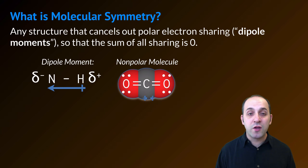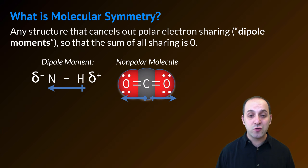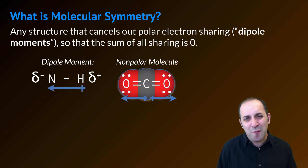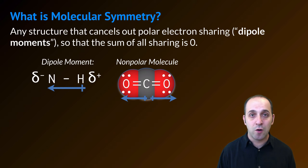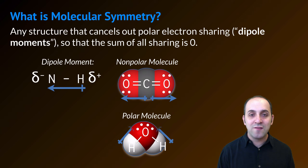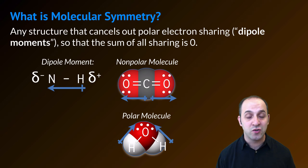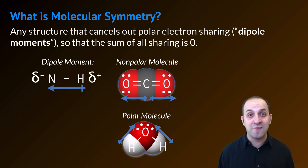A symmetrical molecule is going to cancel that out. Carbon dioxide is a great example — carbon dioxide is symmetrical. Even though the bond between carbon and oxygen is somewhat polar, the dipole moments are in equal and opposite directions so that the overall dipole moment in the molecule is 0. If we look at water, we can see that the dipole moments are equal, but they're not in opposite directions. This makes water non-symmetrical, and as a result, water is very polar.